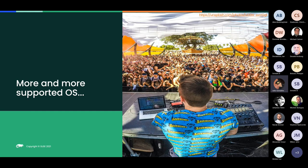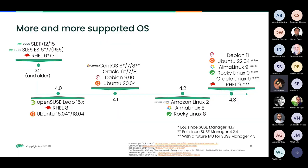We are adding more and more operating systems. Aligned with SUSE Manager 4.3, with Uyuni 2022.06 and 2022.09, we are adding support for Debian 11, Ubuntu 22.04, Alma Linux 9, Rocky Linux 9, Oracle Linux 9, and Red Hat Enterprise Linux 9. As always, if you want to add more operating systems, you can contribute with a pull request. If you have questions about how to do it, you can ping us or use the other pull requests we already merged as examples.